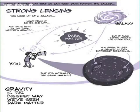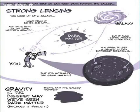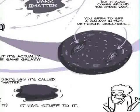Gravity's the biggest way that we've seen dark matter, because we know it feels it. That's why we call it matter. It's dark matter because we know it has stuff to it. It's like one of the only things we know about it.